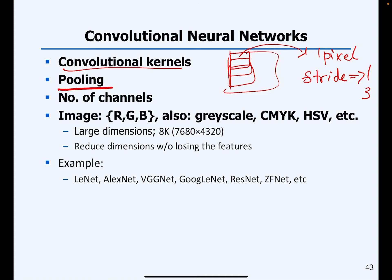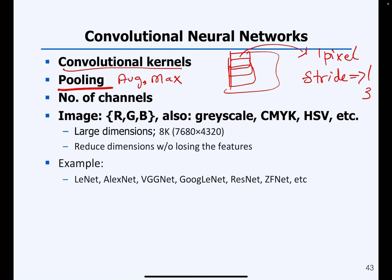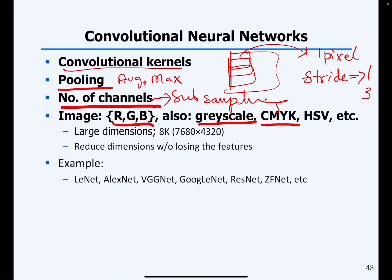Then we have the pooling layer. The pooling layer does not affect the weights — it just extracts the main features using different techniques such as averaging or max pooling, and it is used for sub-sampling. The number of channels can be increased or decreased when creating the convolutional kernels. For an RGB image we have three channels, and there are also other image types such as grayscale, CMYK, and HSV that can be used as input to your CNN.